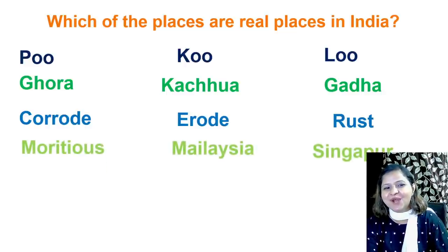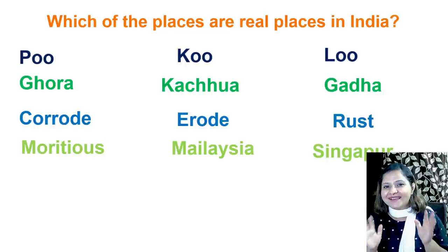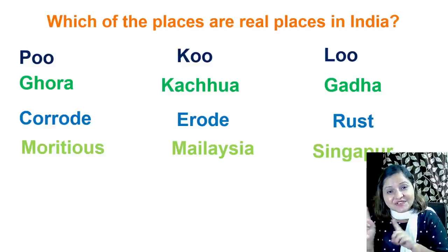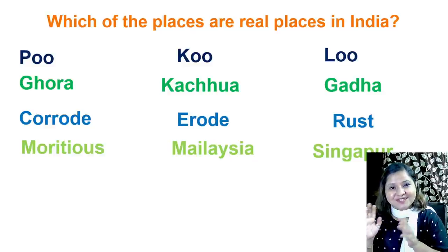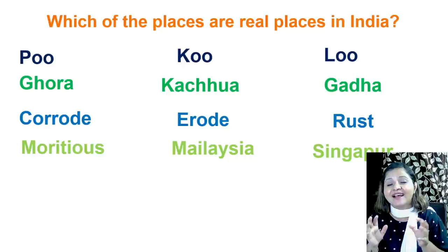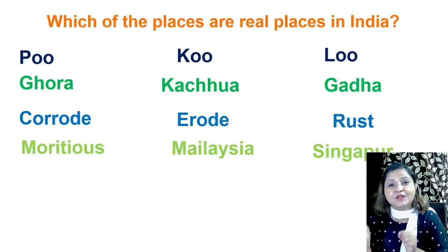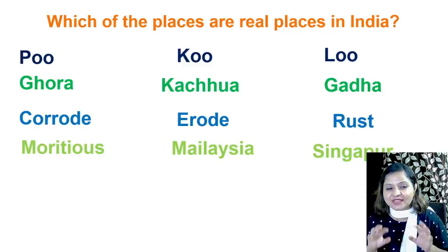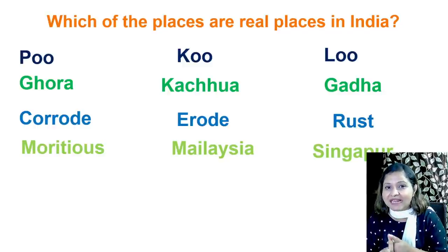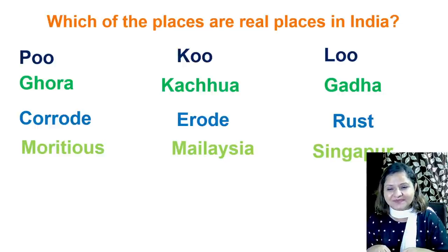One more example: Mauritius, Malaysia, and Singapore. Here I have deliberately used wrong spellings of country names, because I am referring to towns in India. One of the spellings is correct and it is actually a town in India — it is Singapore, which is a town in Telangana.